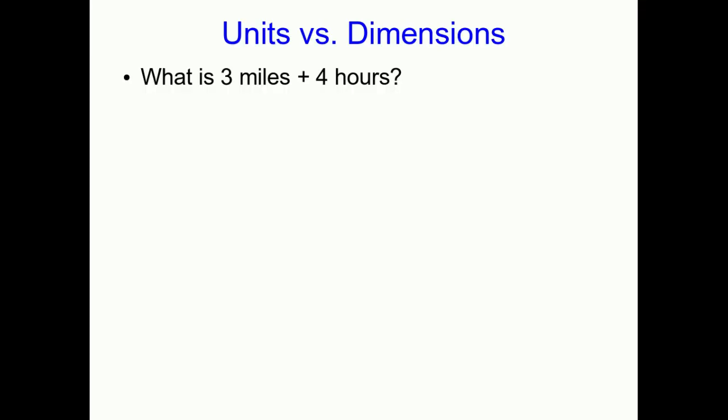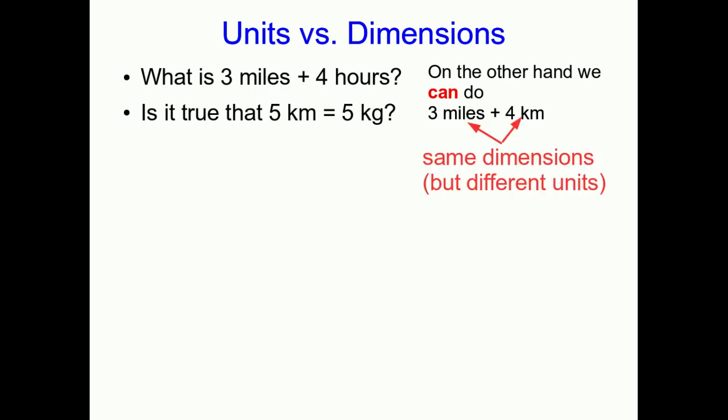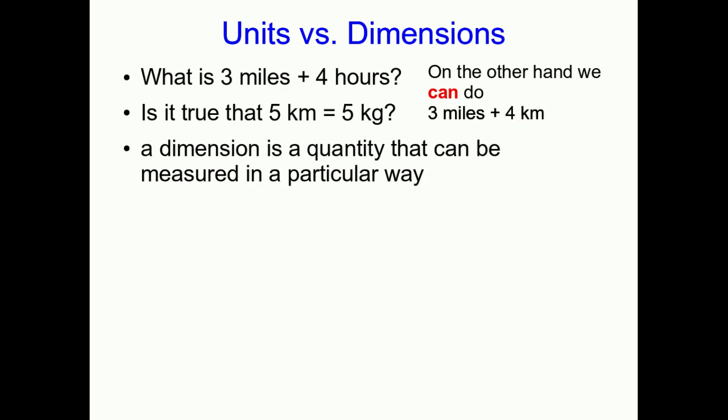What is three miles plus four hours? Is it seven something or others? Is it true that five kilometers equals five kilograms? Well, I hope you agree with me that both of these are totally ridiculous and meaningless questions. You simply can't do this. On the other hand, you can do three miles plus four kilometers. Now, you'd better be careful. It's not going to be seven of anything, because you're going to have to either convert the miles to kilometers or the kilometers to miles before you carry out the addition. But you can do it because miles and kilometers are both units speaking about length. We say these quantities have the same dimensions, even though they have different units. Whereas miles and hours can't be added because they have different dimensions. You can't convert miles to hours.